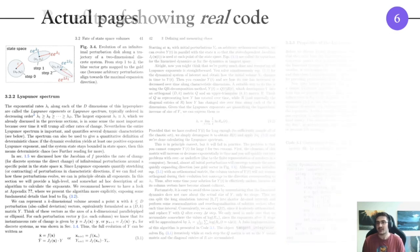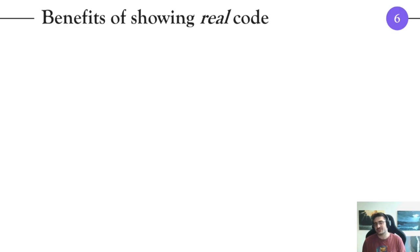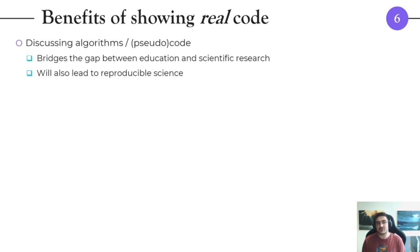Now I will start delving deeper into this approach and how to make it work and why it's so useful. Why is it that I believe there is so much benefit into showing code? First of all, discussing algorithms or having some kind of pseudocode bridges the gap between education and scientific research and will also lead to reproducible science. But as you can imagine this can be done with pseudocode as well—you don't need real runnable code.